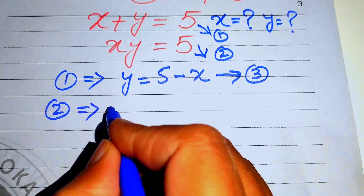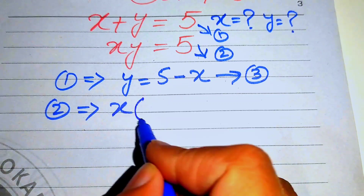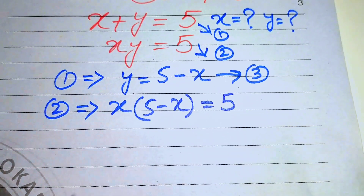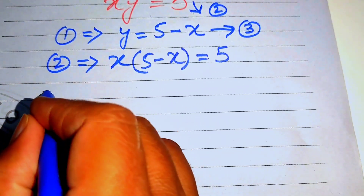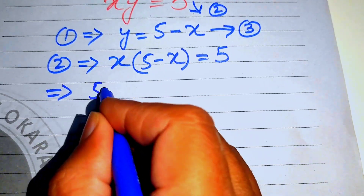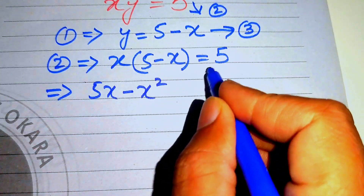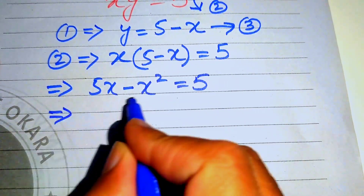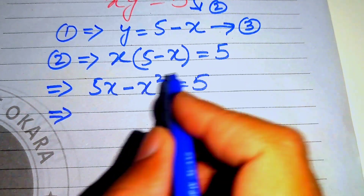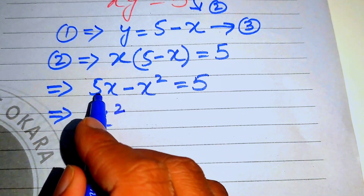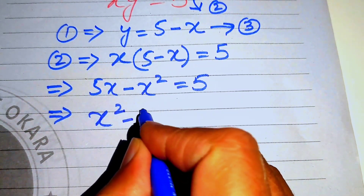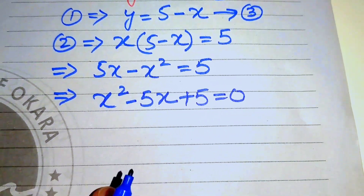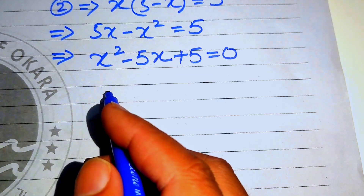Equation number two gives us x times y, so we have x times (5 minus x) equals 5. We multiply x across both terms and get 5x minus x² equals 5. Moving the terms to the right-hand side, we get x² minus 5x plus 5 equals zero, which is the standard form of a quadratic equation.